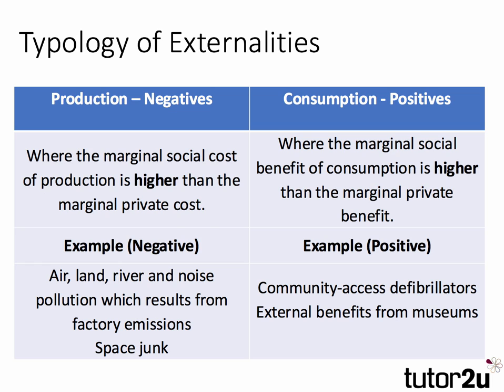Two common types of externalities are: first, negative externalities from production, where the marginal social cost is bigger than the marginal private cost — classic examples being pollution. And second, positive consumption externalities, where the social benefit at the margin of consumption is higher than the benefit to the individual — marginal social benefit bigger than marginal private benefit. Classic examples include merit goods such as museums and libraries, or external benefits from community access defibrillators.